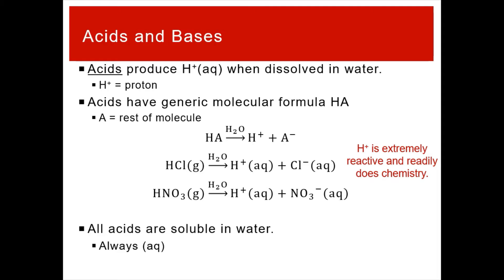For our definition, acids are molecules that when dissolved in water produce H+ dissolved in that water. Hydrogen is atomic number one — one proton — so in a neutral hydrogen atom you have one proton and one electron. H+ means you take away that electron, leaving just a proton. That's why H+ is a unique ion — it's a fundamental subatomic particle. Because of this, all acids must contain hydrogen; you're going to produce H+ when you dissolve in water, so there has to be hydrogen in the molecule.